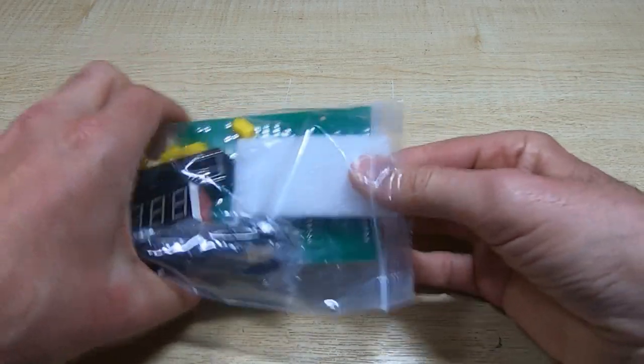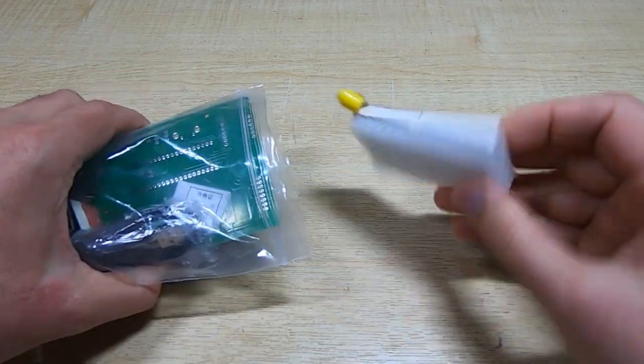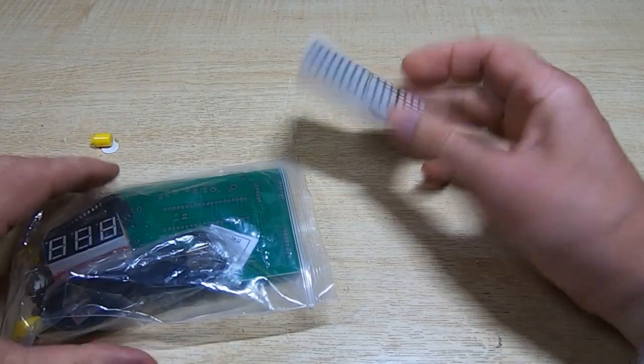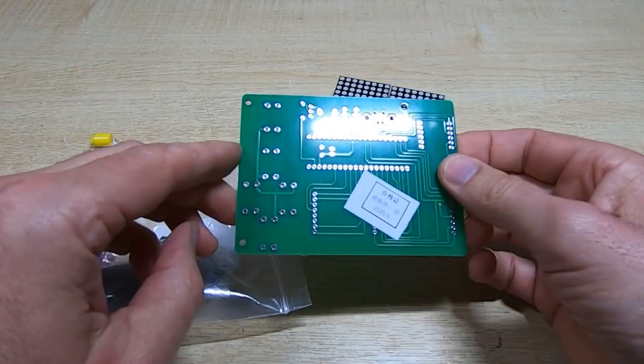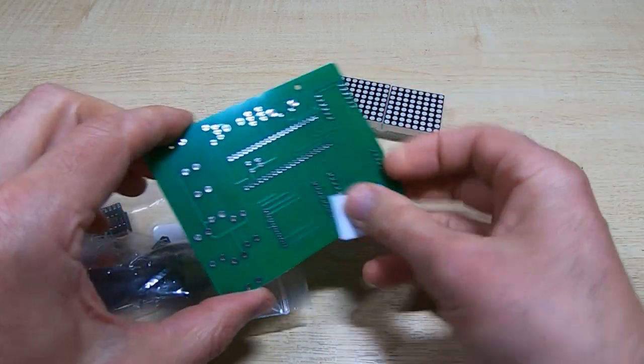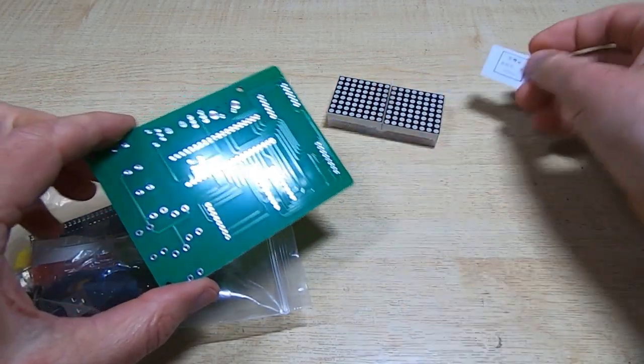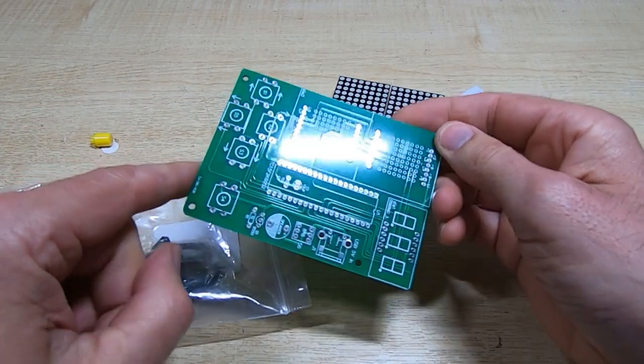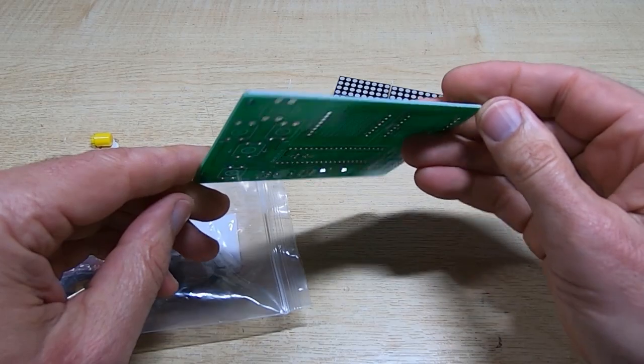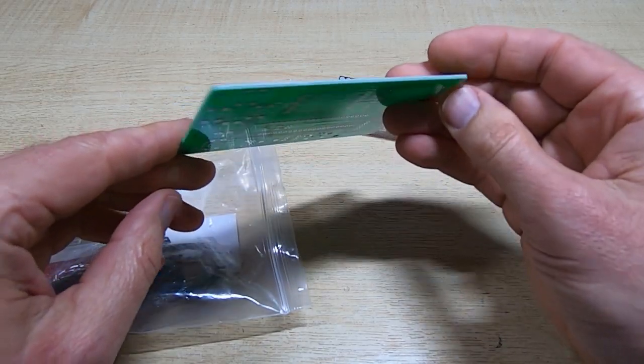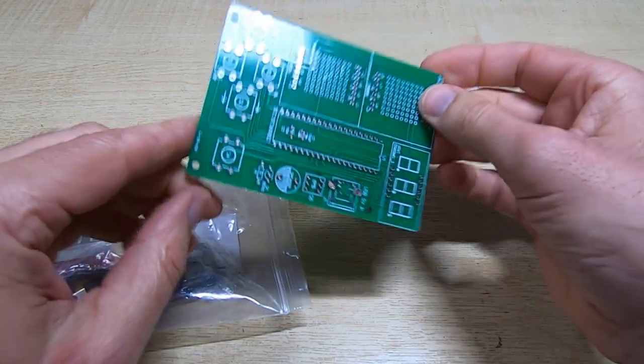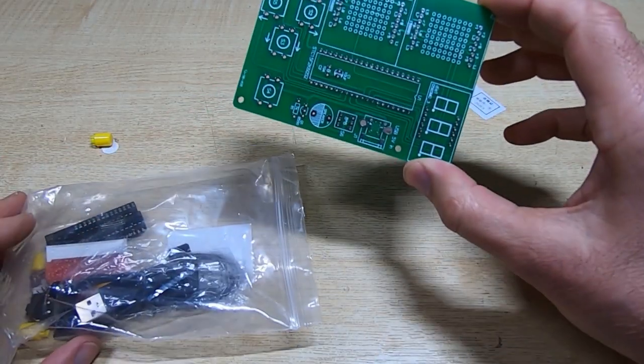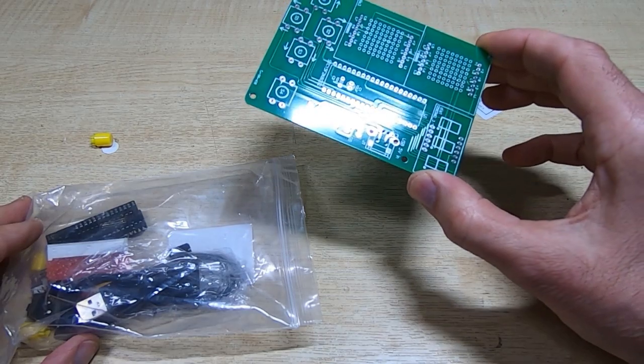So this is exactly how it turned up. We've got the displays. It looks like quite a nice quality board. Here's good material board as well, so it looks like quite a good quality board for a change. Quite often these kits have very low grade boards but this one looks quite good.